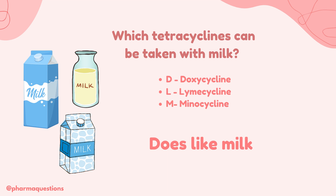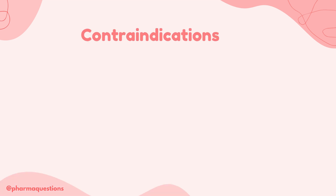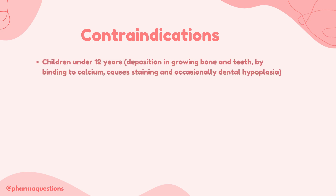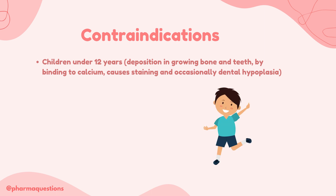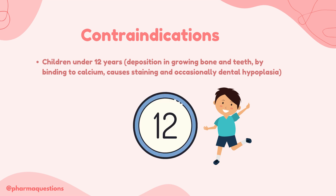Now let's take a look at three important contraindications of tetracyclines. The first is that children under 12 years of age should not be given tetracyclines, because the antibiotic can deposit in growing bones and teeth by binding to calcium, leading to teeth discoloration and defects.